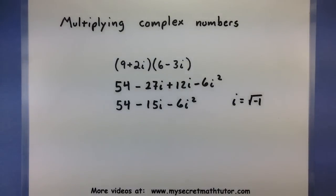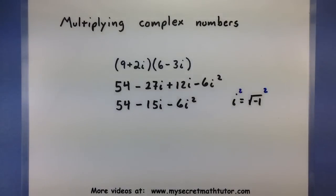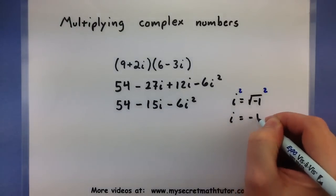That means if we're looking at an i squared, square both sides, then this is simply equal to negative 1.